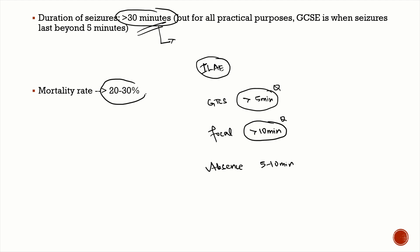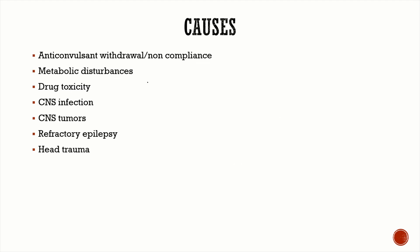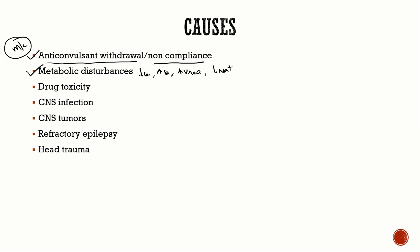The most important and most common cause of status epilepticus is non-compliance to anti-epileptic therapy or anticonvulsant withdrawal. Then metabolic causes like hypoglycemia, hyperglycemia, uremic seizures, and hyponatremia. Other causes include drug toxicity, CNS infections like encephalitis and meningitis, CNS tumors, baseline refractory epilepsy, and post head trauma.